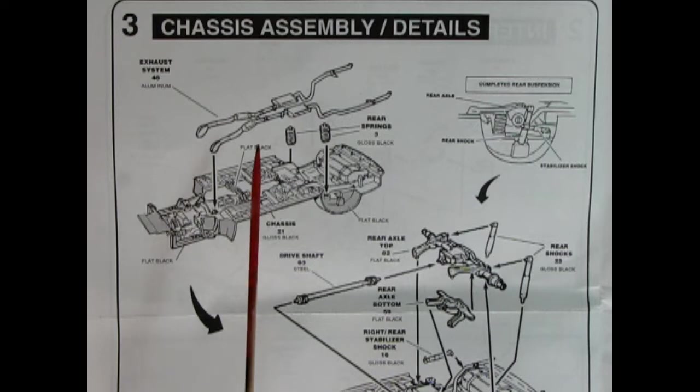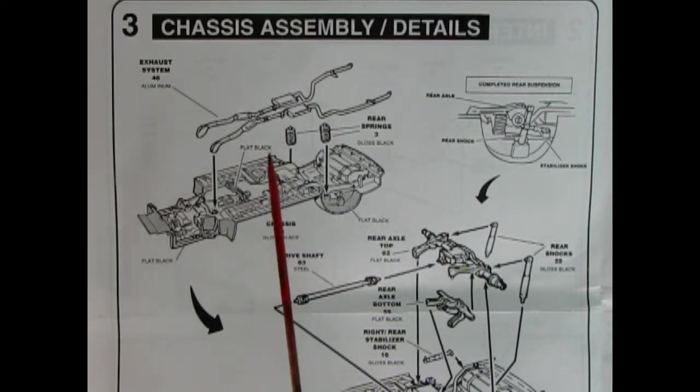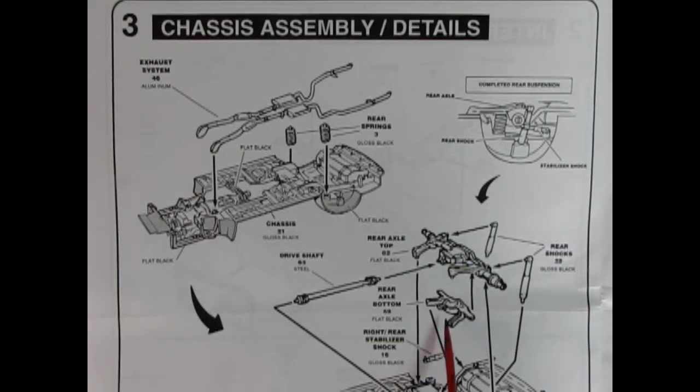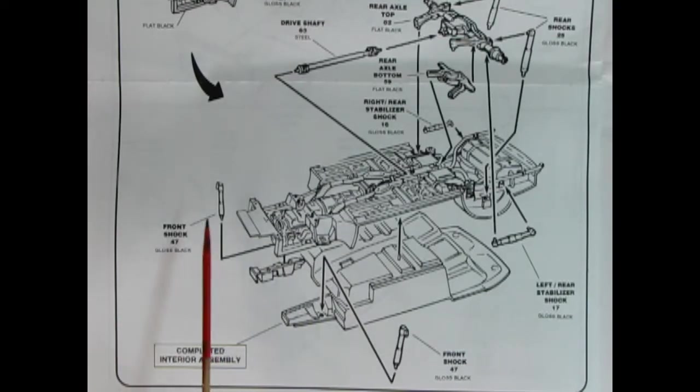Panel three shows our chassis assembly details and you can see this is a big sheet of paper. We've got our exhaust system going in place and our rear springs and then we've got our rear differential here. There's also an axle bottom so those glue together then we got our shock absorbers going in here and right rear stabilizer and a left stabilizer as well. There's our drive shaft going in hooking on the back of the transmission and then into the front of the differential. Here we have the bottom part of that illustration showing the front shock absorbers going in place and getting ready for the next assembly step.